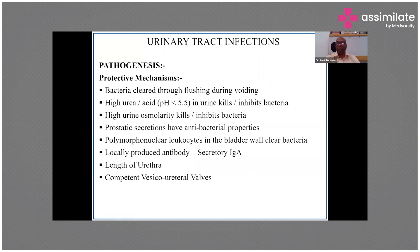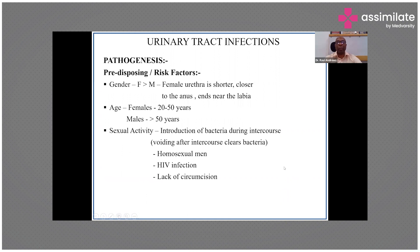Vesicoureteral valves, when competent, ensure unidirectional urine flow from kidneys toward the bladder and help prevent infection. If vesicoureteral valves are not patent, there will be reflux of urine into the kidneys, causing stasis and ascending infections. This can lead to pyelonephritis, which is very dangerous because acute pyelonephritis can progress to chronic pyelonephritis. Females have a higher propensity to UTIs overall.